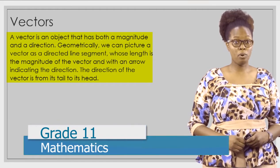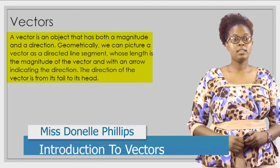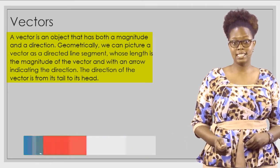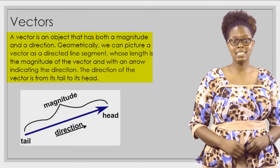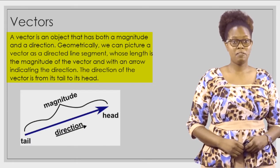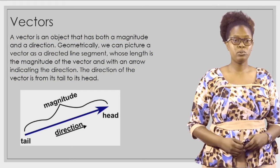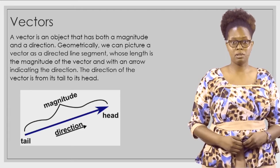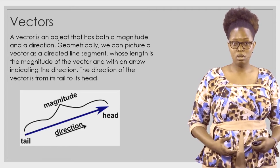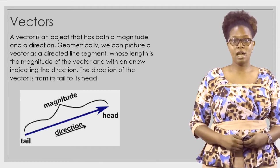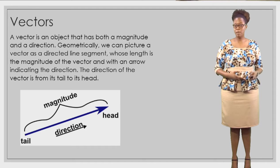So as long as we have some mathematical quantity that just has magnitude but no direction, then that is considered to be a scalar quantity. Vectors, on the other hand, are objects that have both a magnitude and a direction. Geometrically, we can picture a vector as a directed line segment whose length is the magnitude of the vector, with an arrow indicating the direction. The direction of the vector is from tail to its head.